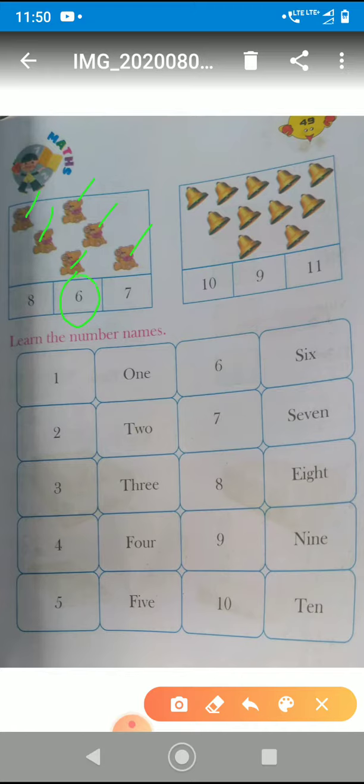Okay, the next one, how many bells are here? One, two, three, four, five, six, seven, eight, nine, ten, eleven. Okay, so eleven is one, one is eleven. So, we will circle eleven.